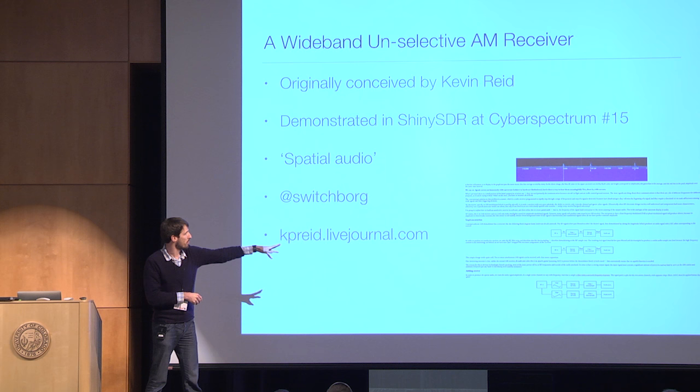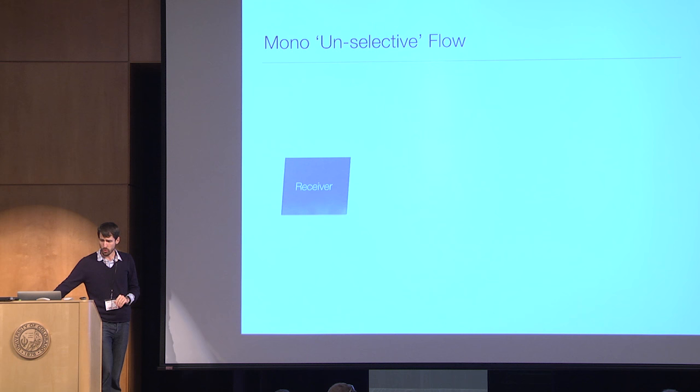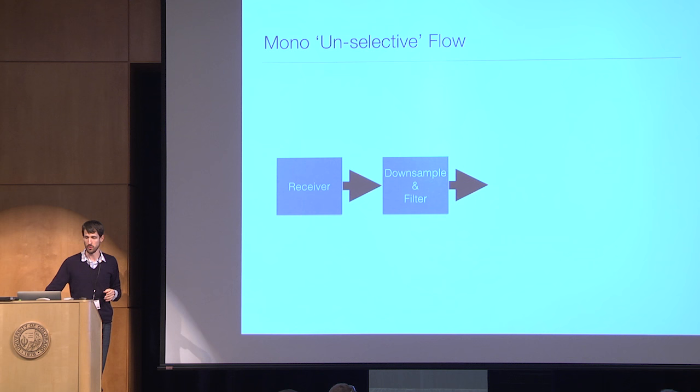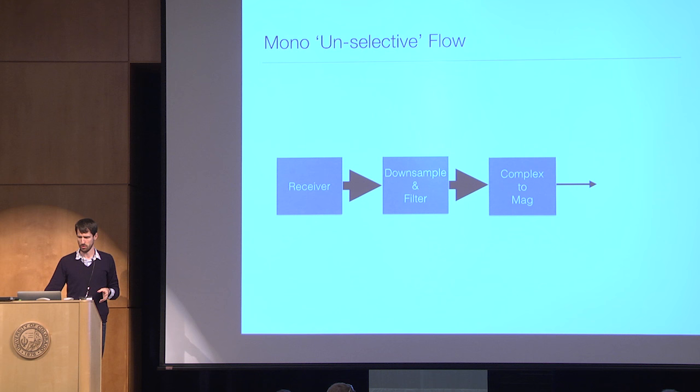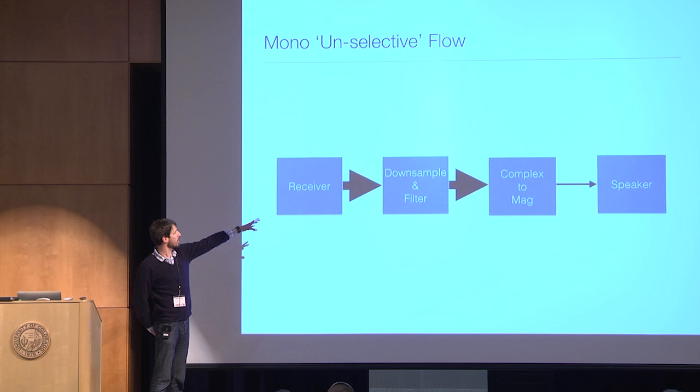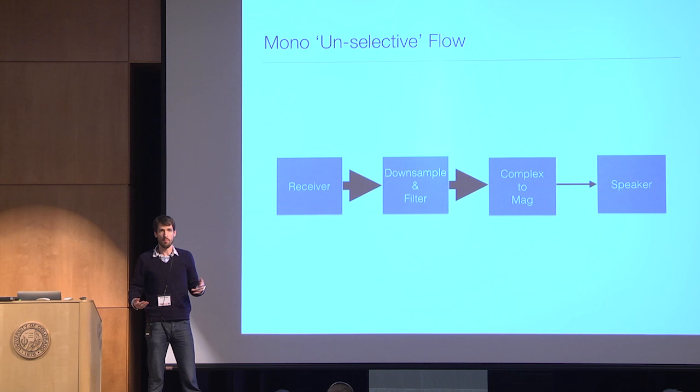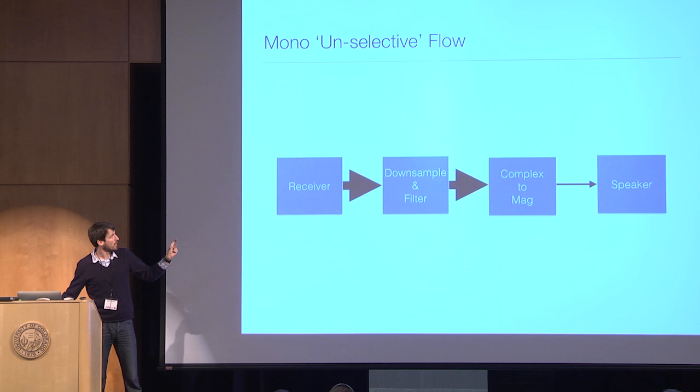He has a nice write-up on his blog. Normally when you're listening to AM signals — generally what voices in the aviation band from 108 to 138 MHz are — you take your large baseband signal at a high sample rate, downsample it, filter it, do complex-to-mag, which is the classic AM demod technique, and then it goes to your speakers at a much lower bandwidth.